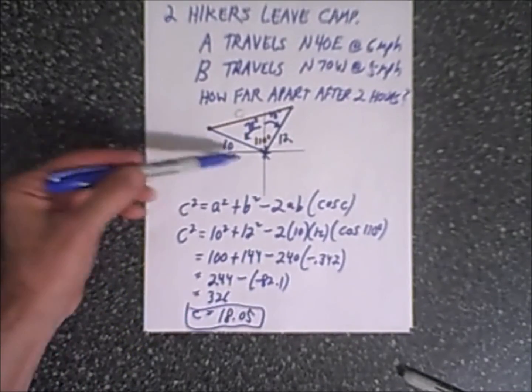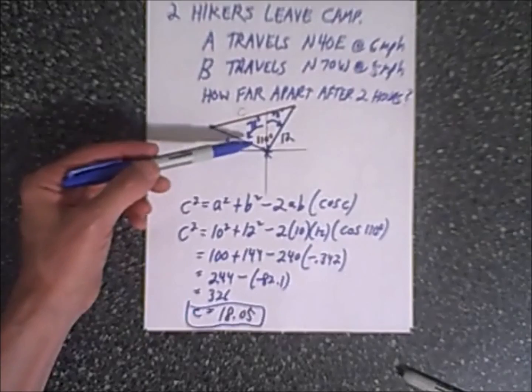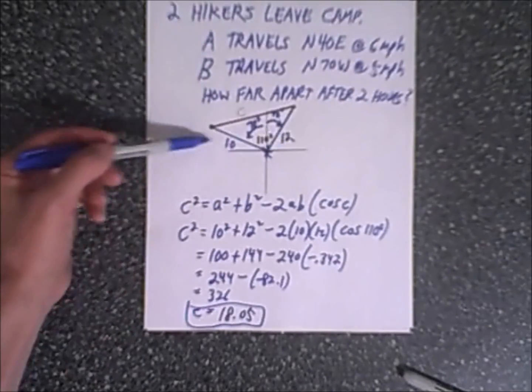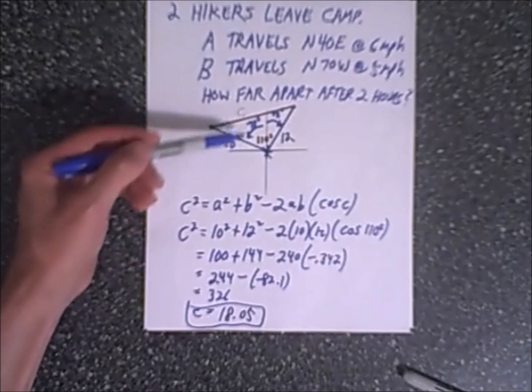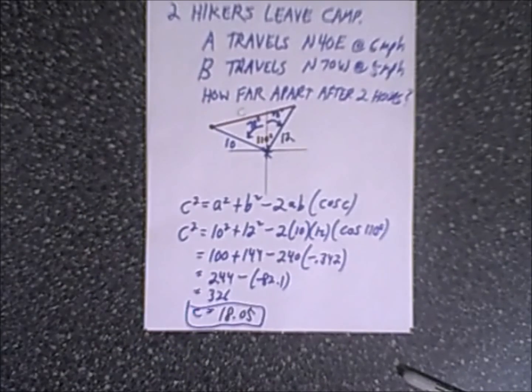And again we can check it's reasonable. This one went 10 that way, 12. If they were going straight across it'd be 22, but since they're at a little bit of an angle towards each other, the answer is 18 and that is the solution.